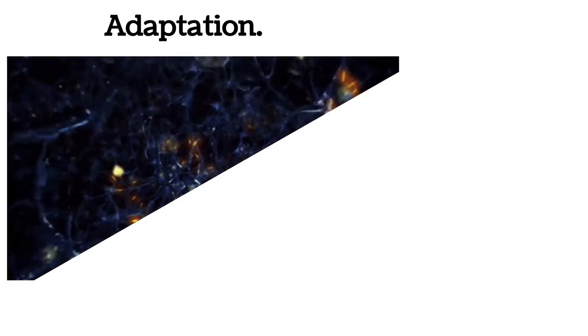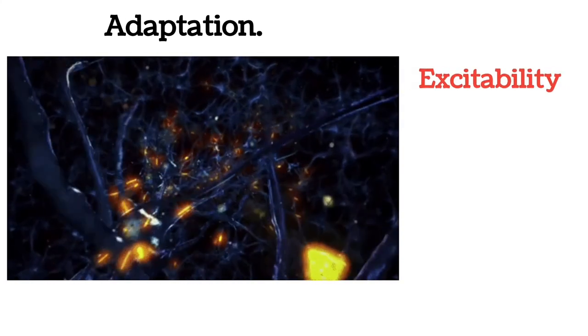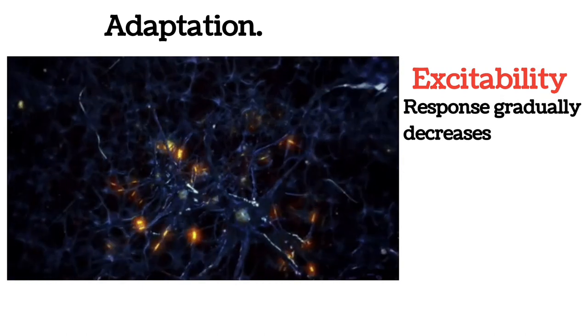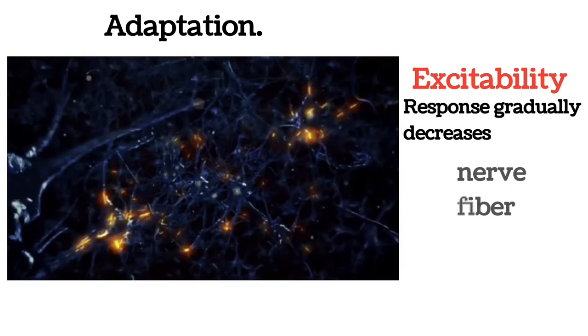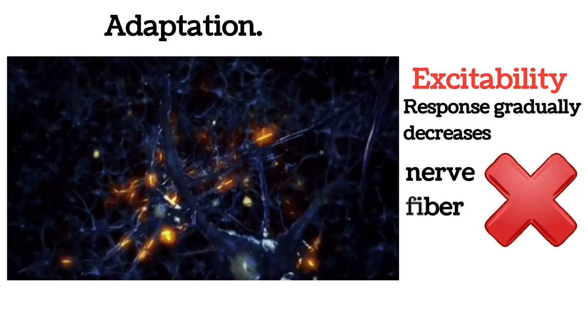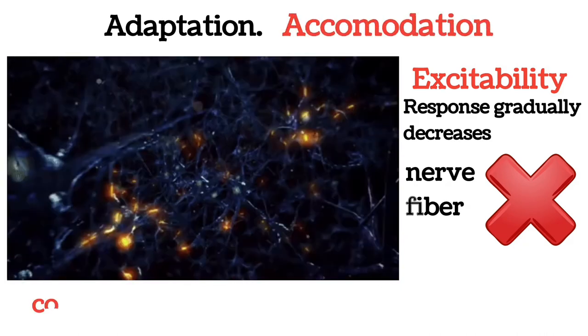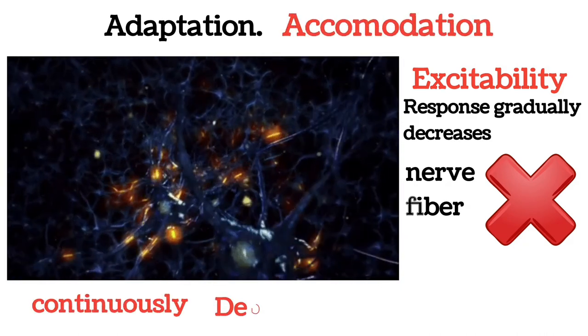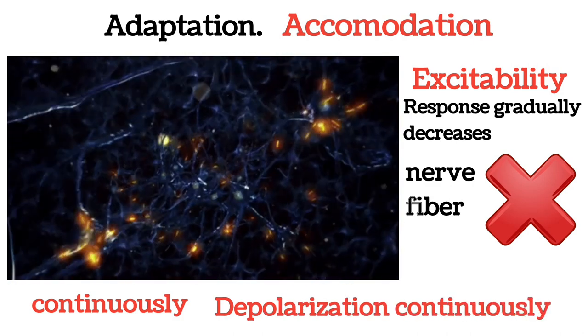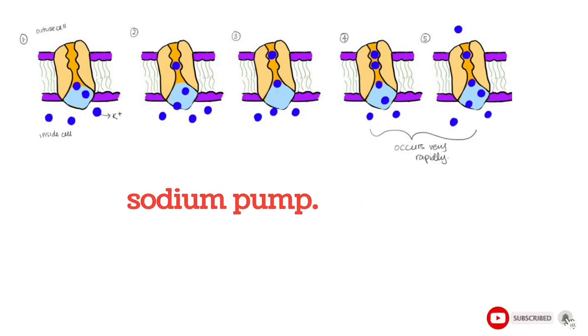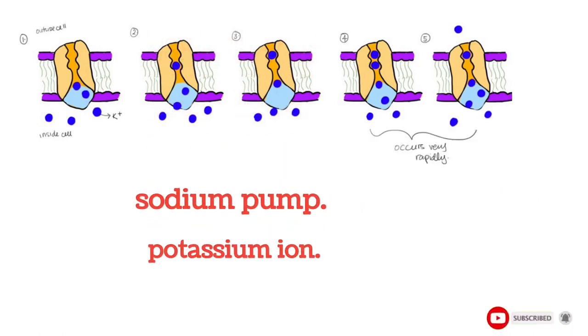Adaptation is a phenomenon in which a nerve fiber has been stimulated continuously and the excitability is greater in the beginning, but later, the response gradually decreases until the nerve fiber does not show any response at all. It is also known as accommodation. Its cause is when a nerve fiber is stimulated continuously, depolarization occurs continuously. Continuous depolarization inactivates the sodium pump and increases the efflux of potassium ions.